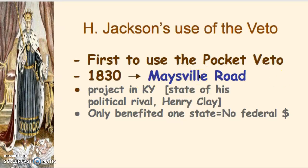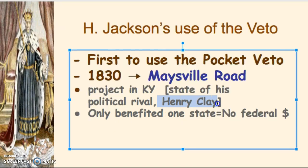The Maysville Road was a project in Kentucky — the state of his political rival Henry Clay, who helped push the Maysville Road Act through Congress. The road would be an internal improvement to help Western areas, particularly Kentucky. Jackson vetoed it because his argument was that it only benefited one state; therefore, federal money shouldn't be used for the improvement. If it crossed state lines it would be different, but since it was within one state he felt the money shouldn't go there — and it probably didn't hurt that Henry Clay was its advocate.